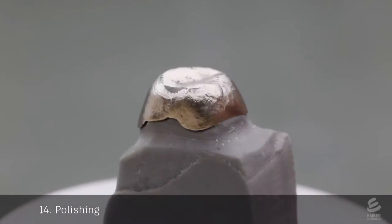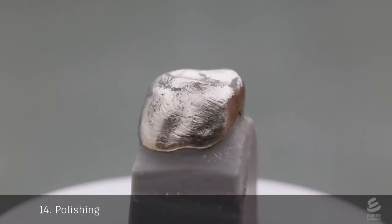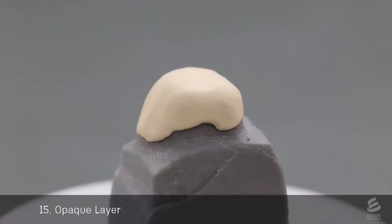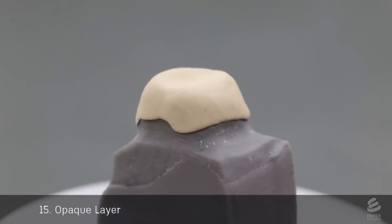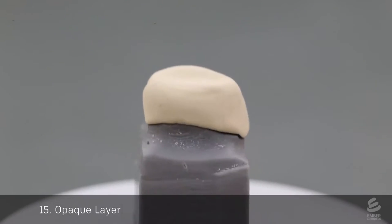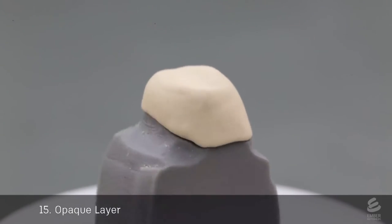This metal casting will form the substructure of the final crown. Next, an opaque layer is applied to the casting. It acts like a primer. It covers up the gray color of the metal and also increases adhesion with the porcelain layer.